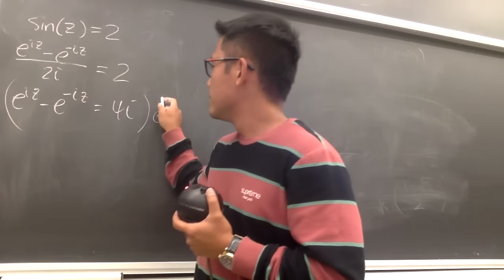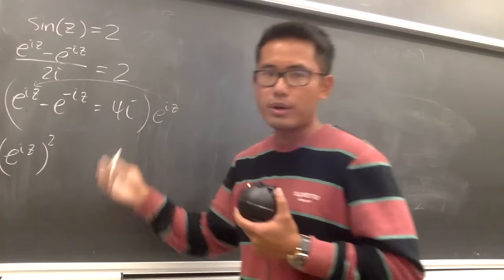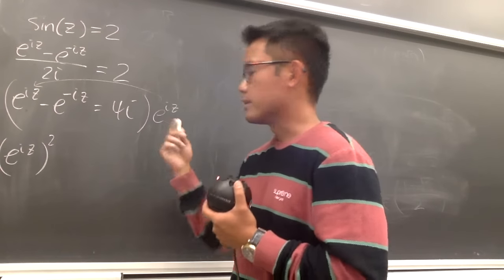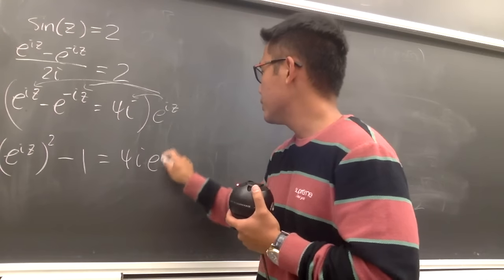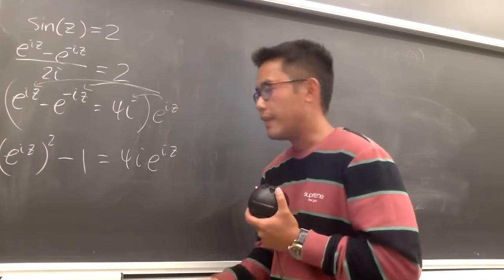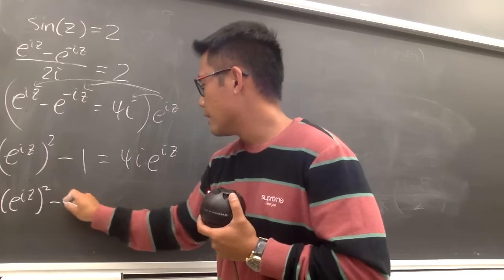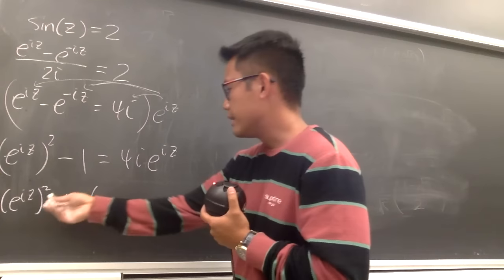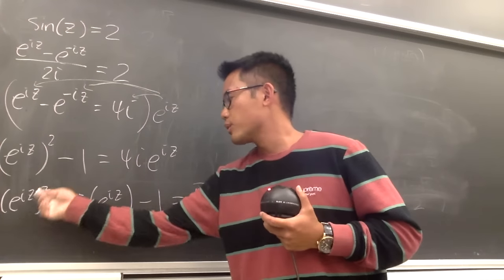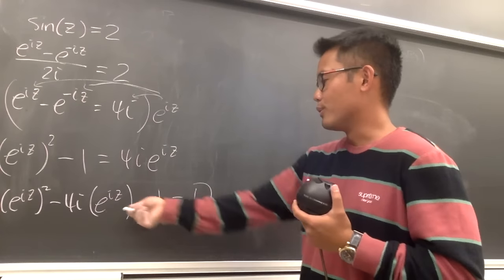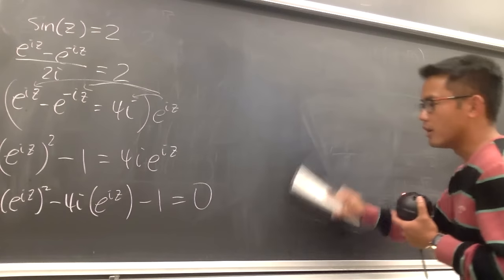Distributing: e to the iz squared, and the middle term becomes minus 1, equals 4i times e to the iz. Rearranging, we get (e to the iz) squared minus 4i times (e to the iz) minus 1 equals zero. This is a quadratic equation in terms of e to the iz, so we can use the quadratic formula.